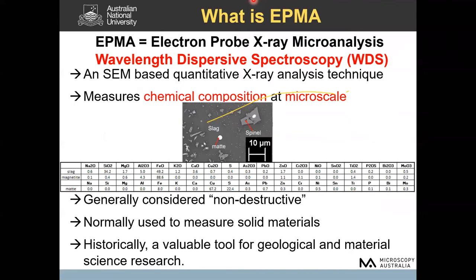EPMA generally refers to wavelength dispersive spectroscopy, WDS, as opposed to energy dispersive spectroscopy, EDS. It is a SEM-based X-ray analysis technique, often used to quantitatively measure the chemical composition of very small phases or features. Here is an example — a backscatter electron image of a waste material produced in a smelter. Some features are very small, in the order of two to three microns. EPMA is able to measure the chemical composition of these micro-scale features, and in most cases the technique is non-destructive.